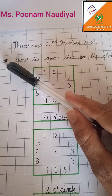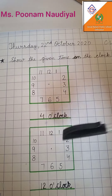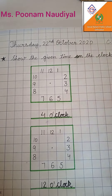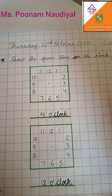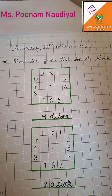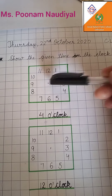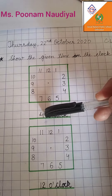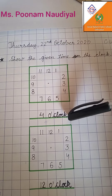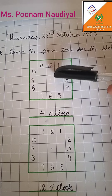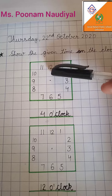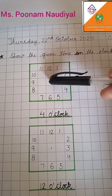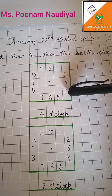Then you will draw two clocks and write down the given time. After that, you will draw both the hands on the clock. For example, if the time given is four o'clock, you will draw the long hand on 12 and the short hand will be on four.